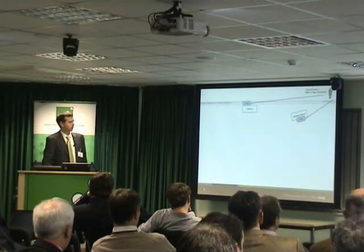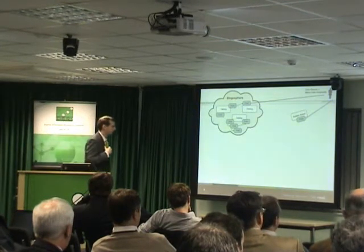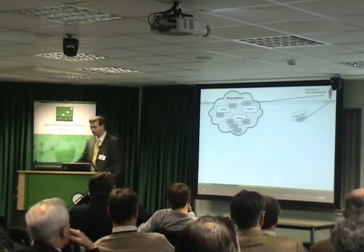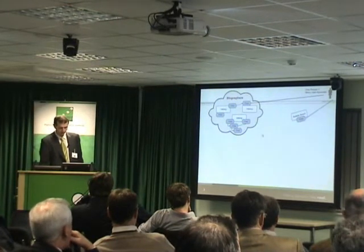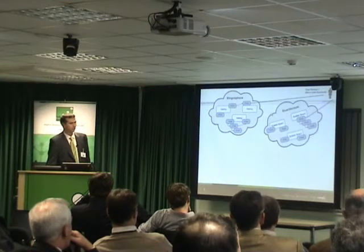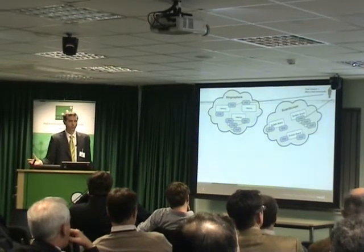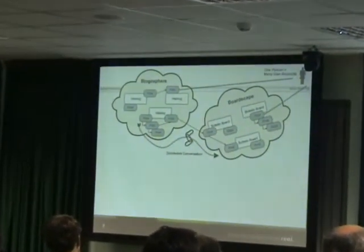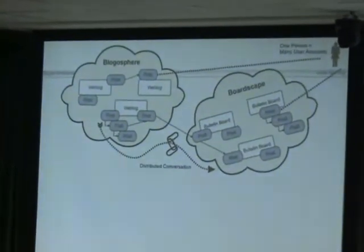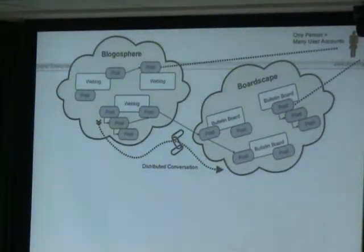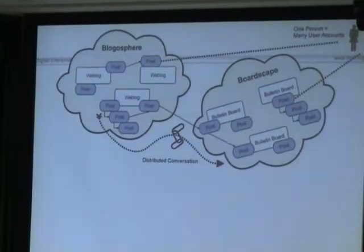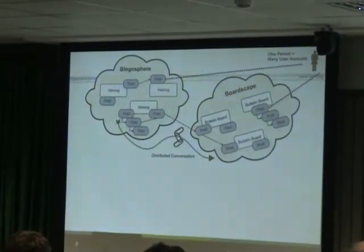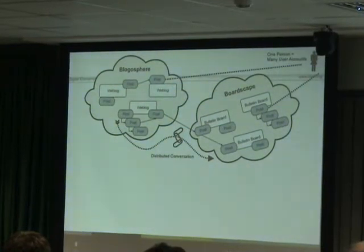These posts on weblogs and bulletin boards are in turn part of a bigger discussion cloud. For example, blog posts are part of what's called the blogosphere. Bulletin boards can be thought of as the boardscape — the collection of bulletin boards around the world. These things are connected in some way, but not usually together. Blogs are connected through something called trackbacks: if I write a blog post in response to something on someone else's blog, they use the trackback system to link between blog posts. But at the moment, connections don't exist between the different discussion clouds — between blogs and bulletin boards, there aren't any mechanisms to connect these.